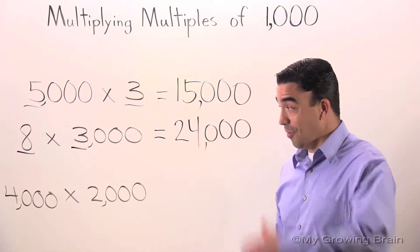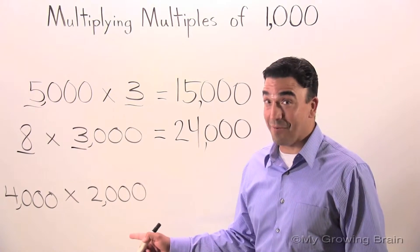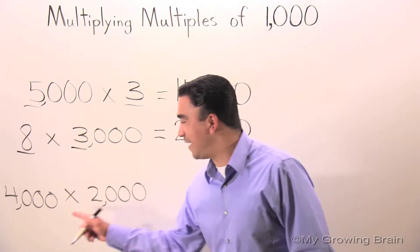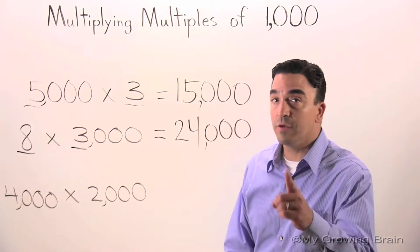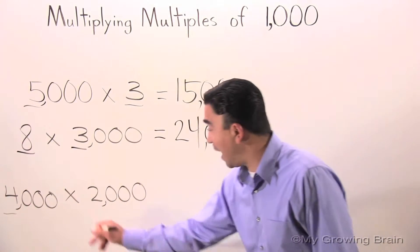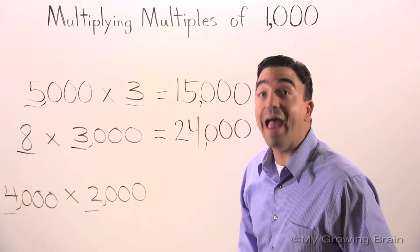One more to go. And boy, this is a big one. Four thousand times two thousand. Start off by multiplying four times two, which is eight.